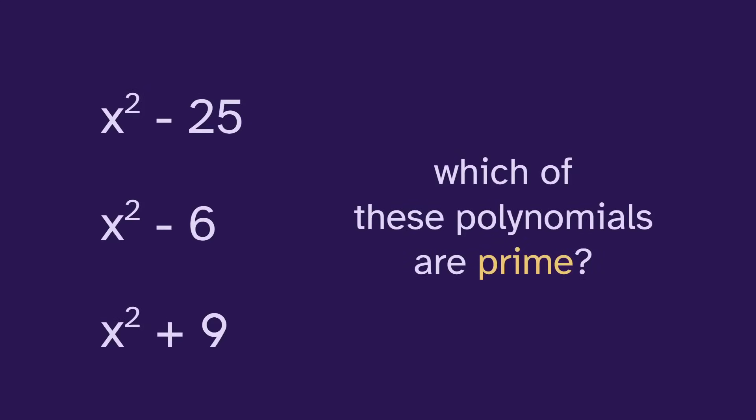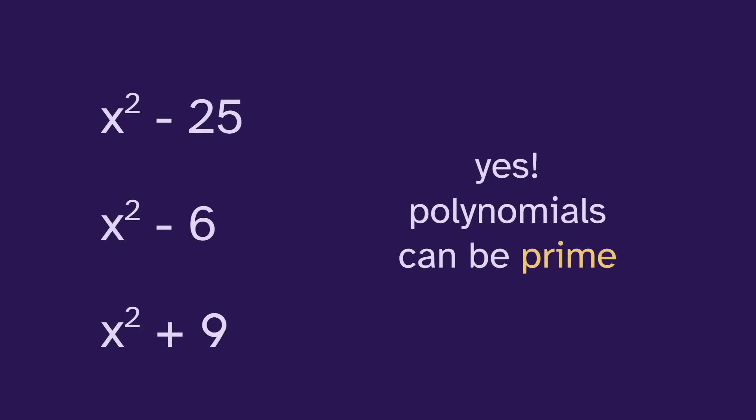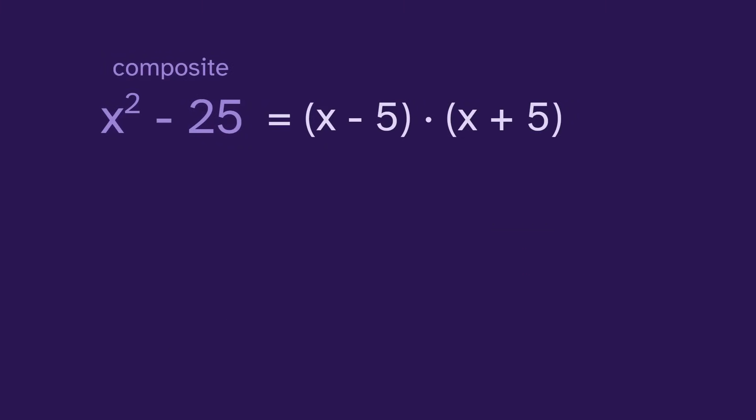Which of these polynomials are prime? Yes, polynomials can be prime, but this one's not. It's composite, because it can be factored into two smaller polynomials, similarly to how a composite number can be factored into two smaller numbers.